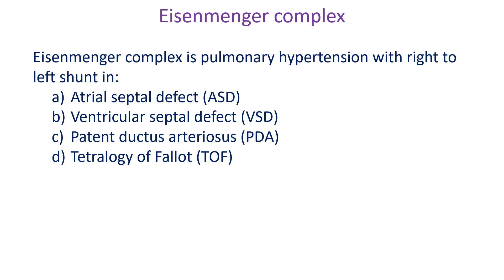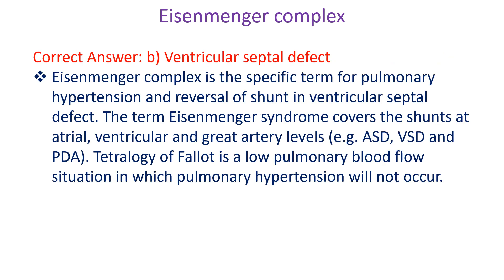Eisenmenger complex is pulmonary hypertension with right-to-left shunt in: A. Atrial septal defect. B. Ventricular septal defect. C. Patent ductus arteriosus. D. Tetralogy of Fallot. Correct answer: B. Ventricular septal defect. Eisenmenger complex is the specific term for pulmonary hypertension and reversal of shunt in ventricular septal defect. Eisenmenger syndrome covers shunts at atrial, ventricular and great artery level, e.g. ASD, VSD and PDA. Tetralogy of Fallot is a low pulmonary blood flow situation in which pulmonary hypertension will not occur.